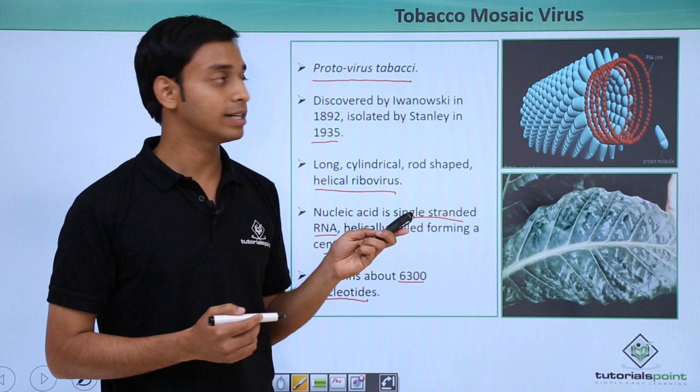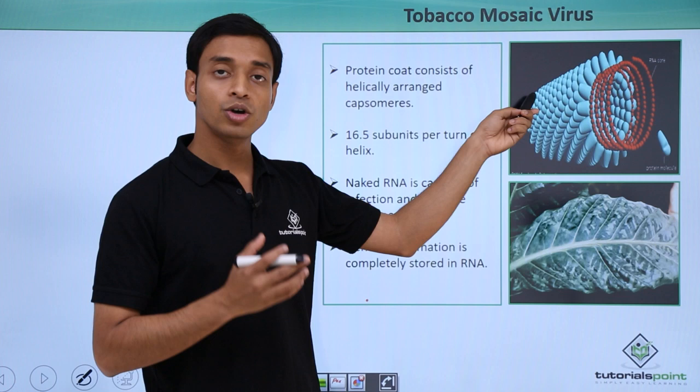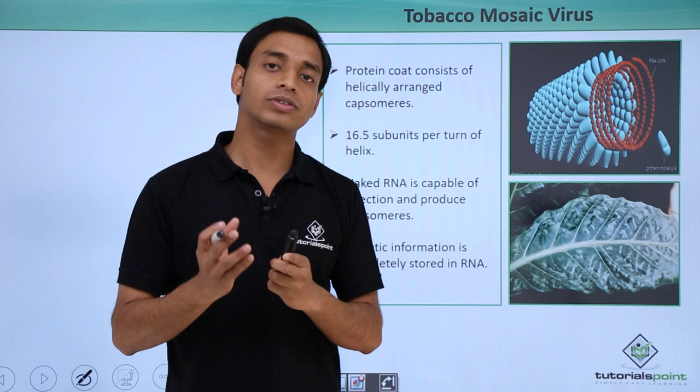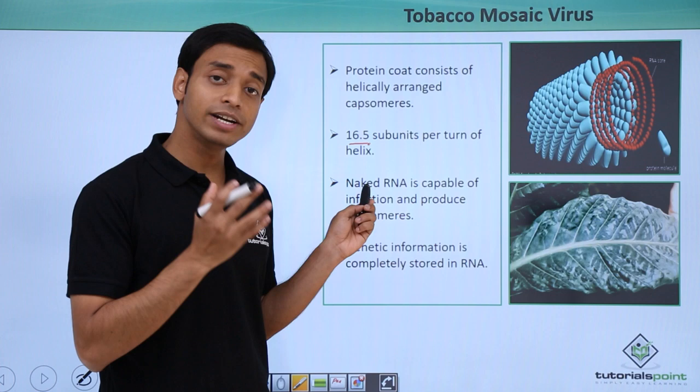This RNA consists of about 6,300 nucleotides. The blue shaded regions you are seeing are the protein coats, also called capsomers. These capsomers are arranged in a helical form, and in each turn of the helix there are about 16.5 such capsomers, or protein subunits.